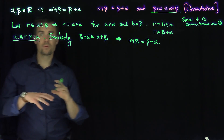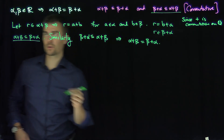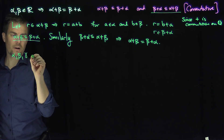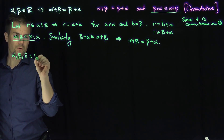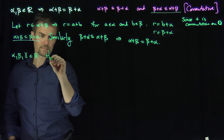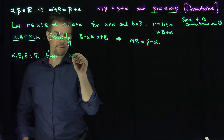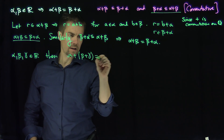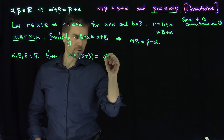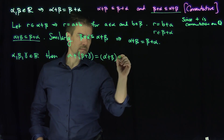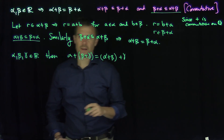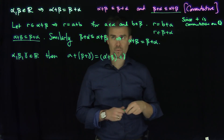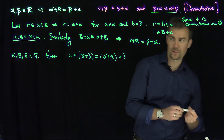Now we can move on to our proof of associativity, which follows something similar. If alpha, beta, and gamma are real numbers, then alpha plus open-paren beta plus gamma close-paren is equal to open-paren alpha plus beta close-paren plus gamma. We'll see this is exactly the same proof as before, so we'll do it quickly so we can get to something more interesting.